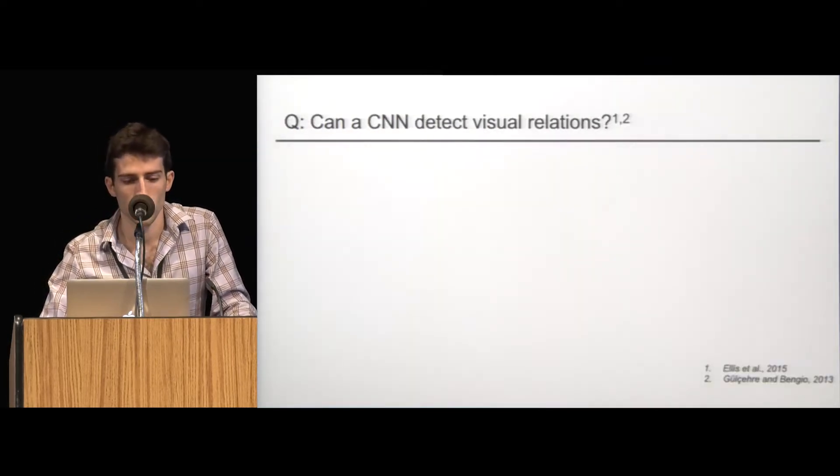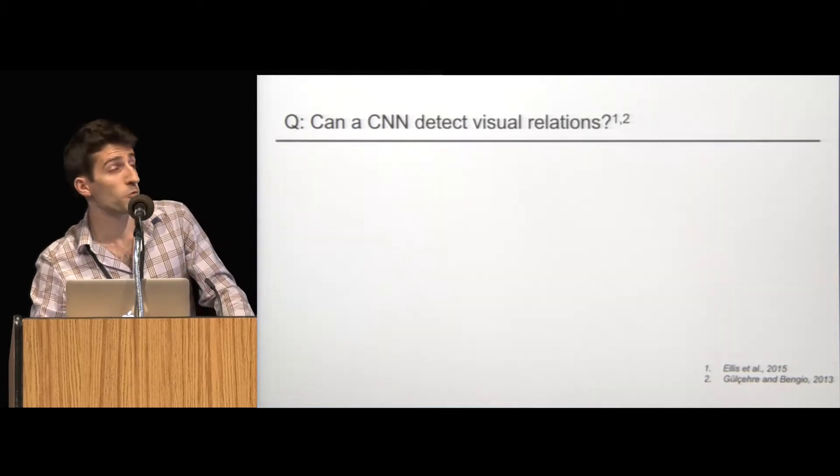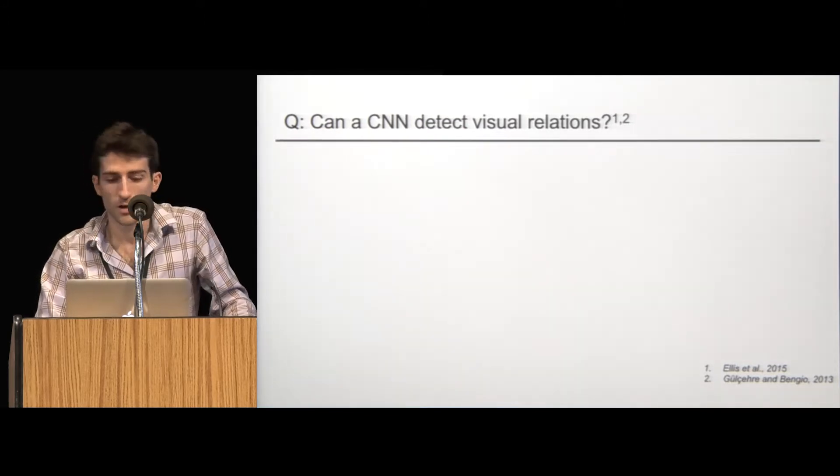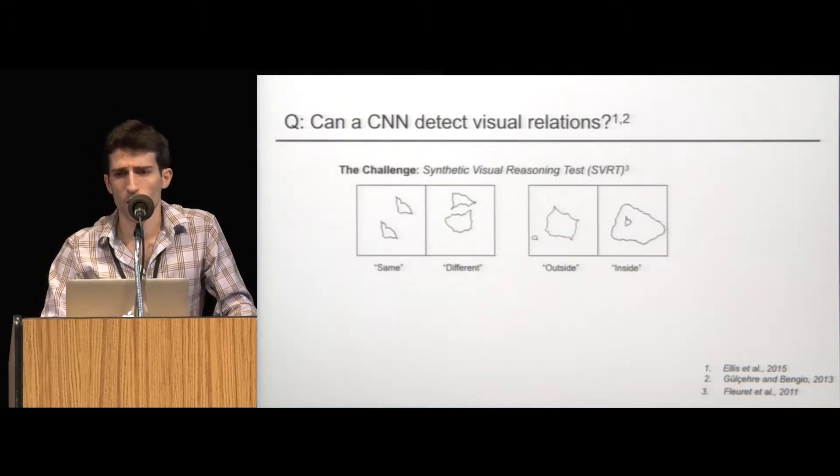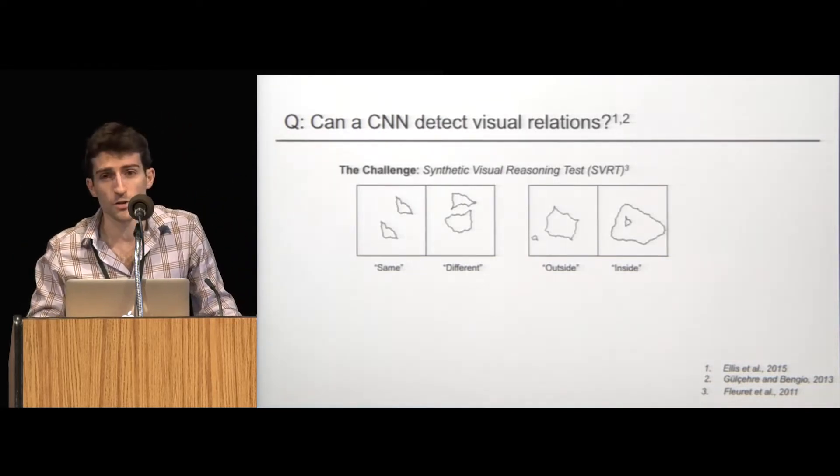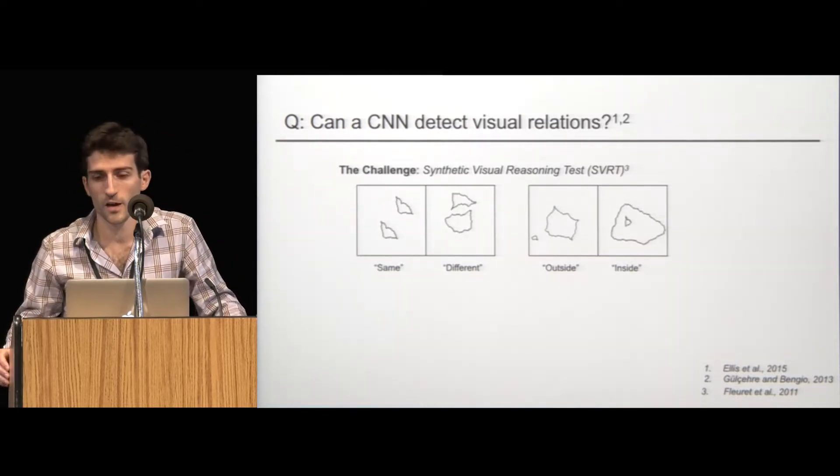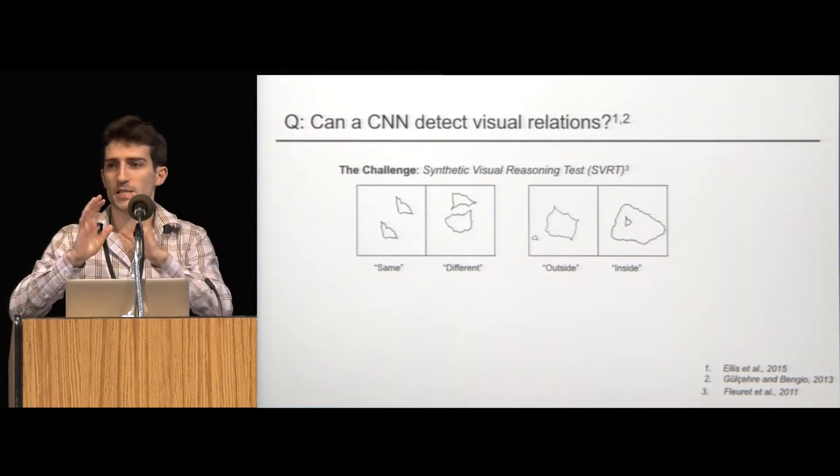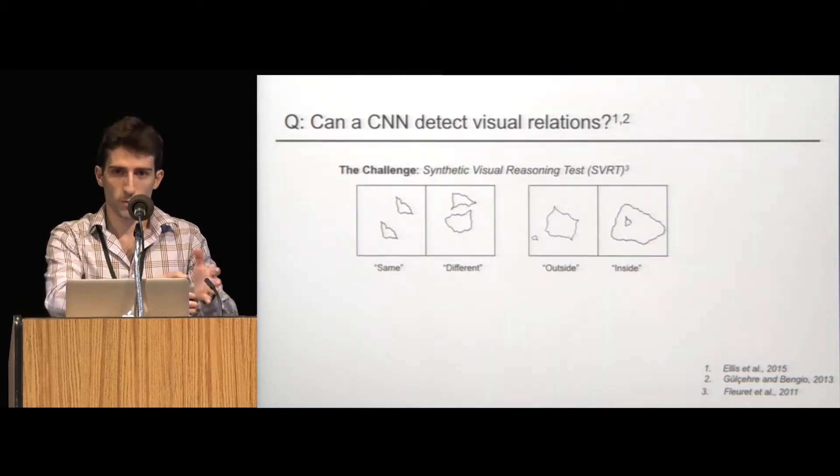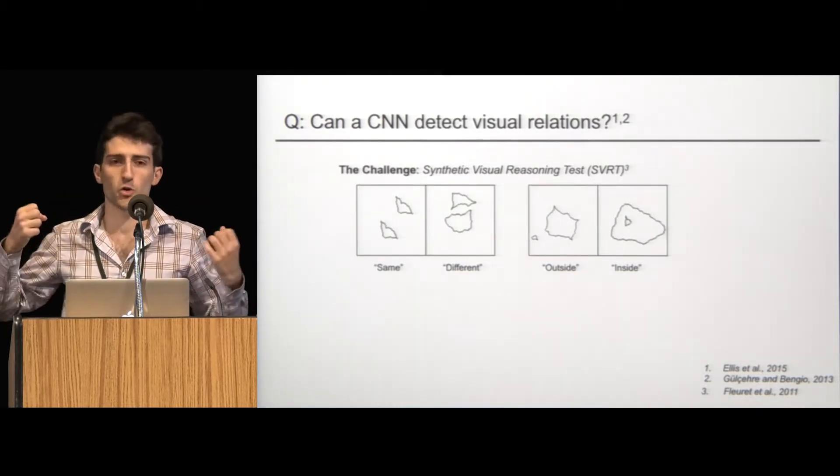So I'll pose a question to you. Can a CNN detect visual relations? Well, this is a question that was posed before by Ellis et al in the Tenenbaum group and Gilser and Bengio later. And to answer that question, this preliminary question we're posing, we're going to take a challenge. And the challenge is called the synthetic visual reasoning test. This is a test from Florey et al, 2011. And the test consists of 23 binary classification problems.